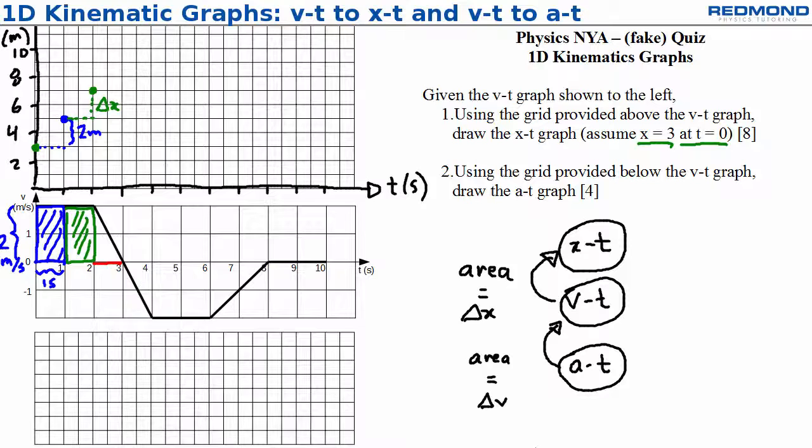From 2 to 3 seconds, the velocity goes from 2 meters per second down to 0, and the area is a triangle, so I take the base, 1 second, times height, 2 meters per second, divided by 2 to get an area of 1 meter. Adding 1 meter to my position at 2 seconds gives 8 meters at 3 seconds. Notice that each time the displacement is added to the previous position.